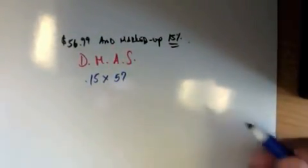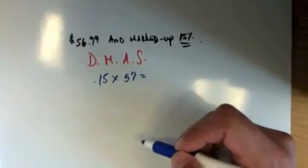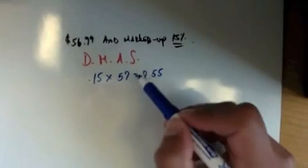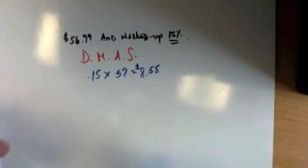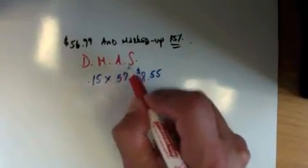Remember, work smarter, not harder. And when you multiply these two values, if everything goes well, you should get $8.55. I'm hoping you guys are pretty good with your decimals multiplying. And the last one: addition or subtraction.